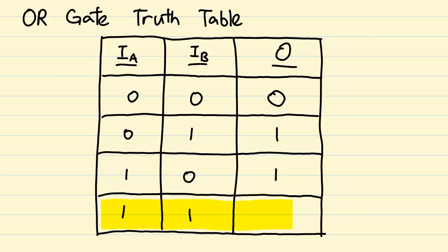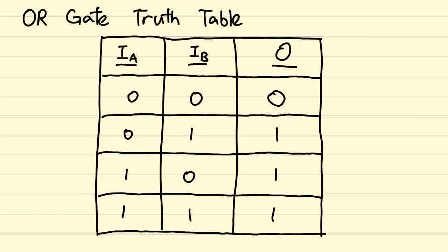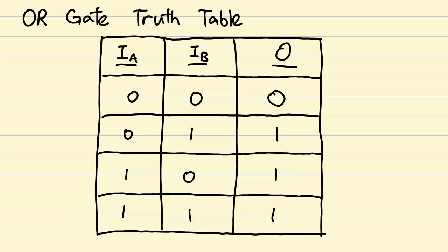Now, when both inputs are true, does it also mean that at least one of the two inputs are true? Well, yes, hence the output is still true. This truth table is characteristic of the OR gate. Learn to recognize this table, you'll need it.